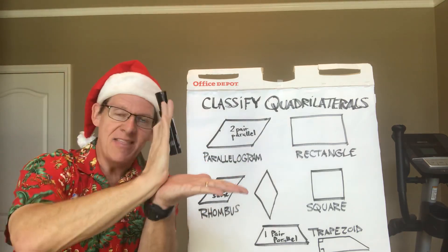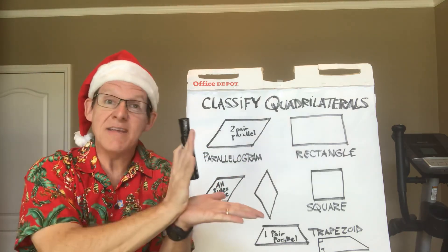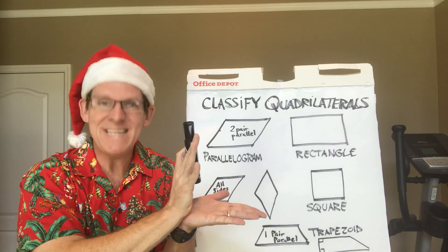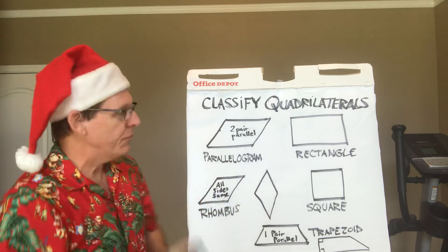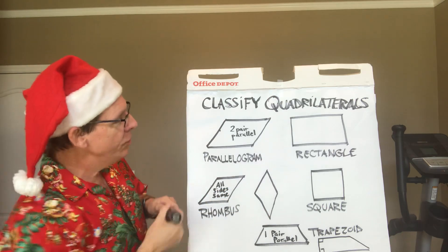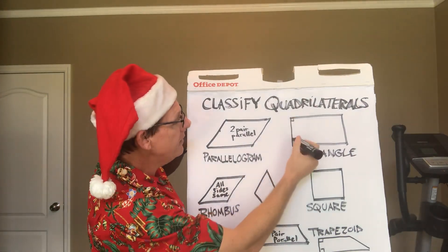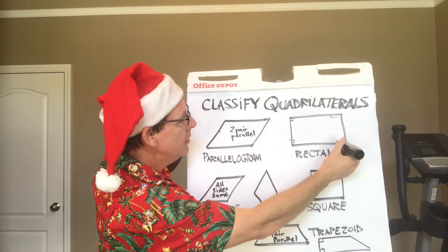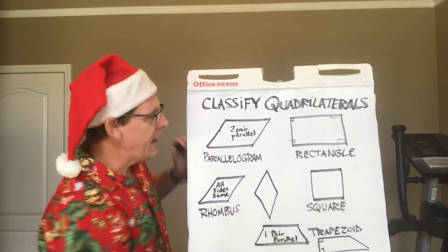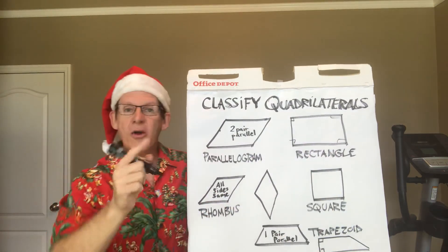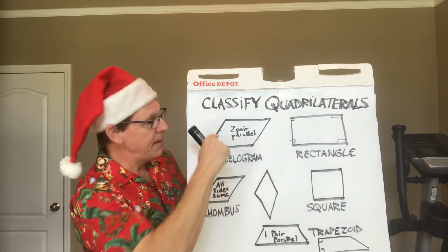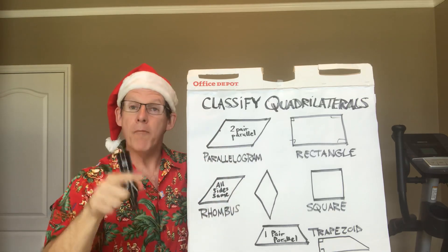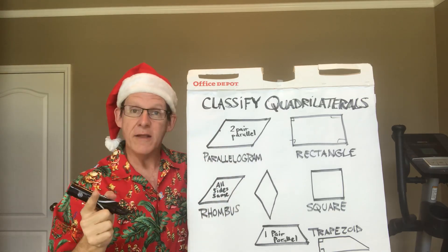Right angles mean the sides come together like this. There's a fancy math word for it: perpendicular. You'll notice the rectangle has one, two, three, four right angles. So a rectangle is a parallelogram, but with four right angles.